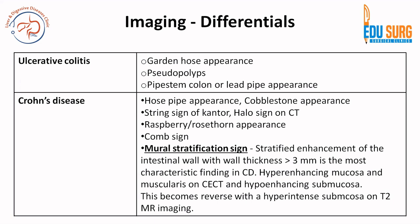Coming to Crohn's disease — very commonly asked questions. Cobblestone appearance is a common question, string sign of Cantor, halo sign on CT, raspberry or rosette appearance, and the comb sign is also seen in Crohn's disease. We have already discussed the comb sign; you can see it on MR as well — T1 MR. Mural stratification is the most common finding associated with Crohn's disease.